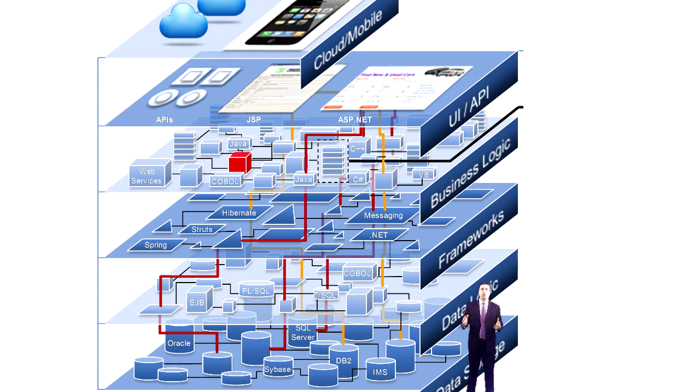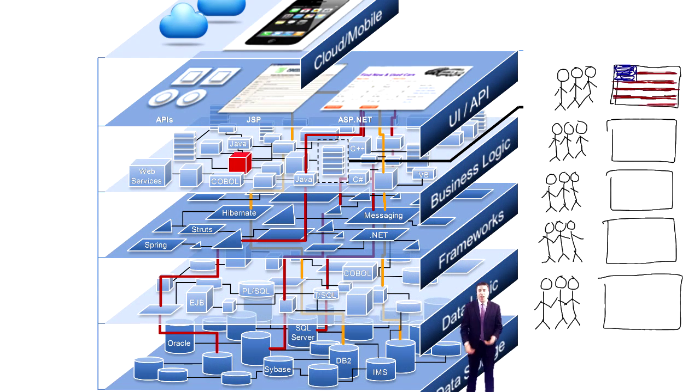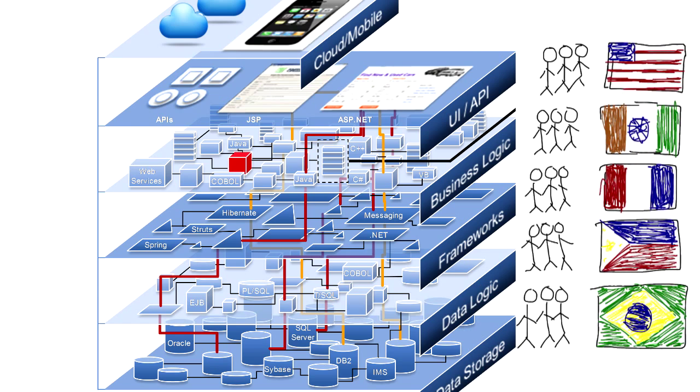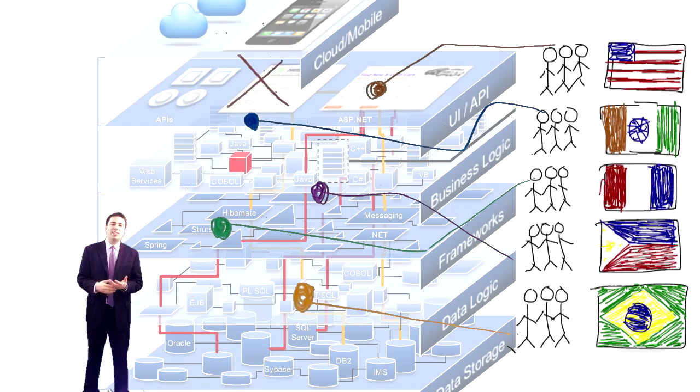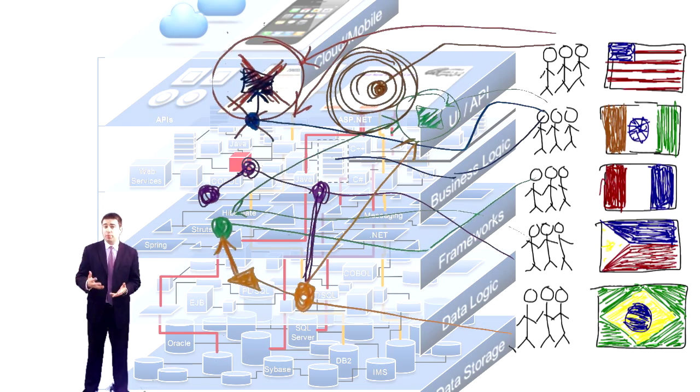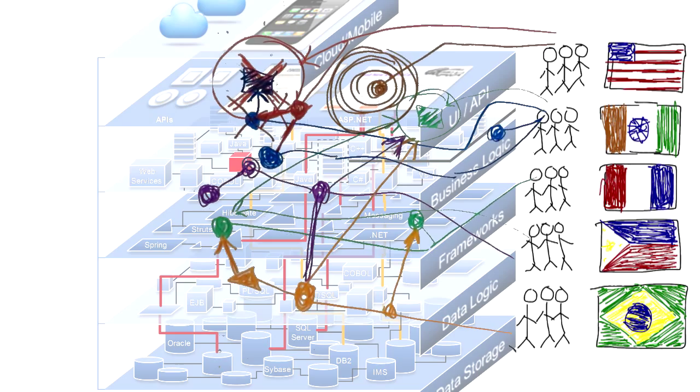So how complex are applications? Well today they consist of multiple tiers, multiple technologies, and many teams from around the globe putting them together at the same time. This level of complexity makes it difficult to keep track of all of the changes that are being done, let alone the application as a whole.